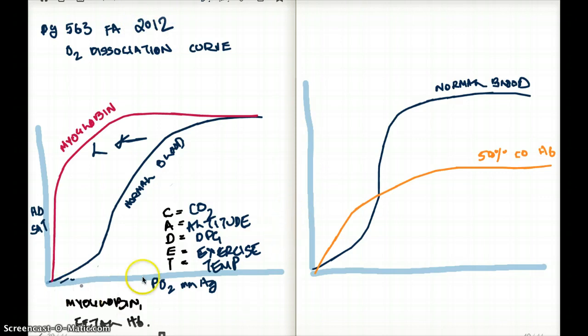So in an oxygen dissociation curve, on the x-axis we are going to see partial pressure of oxygen, and on the y-axis we're going to see hemoglobin saturation.